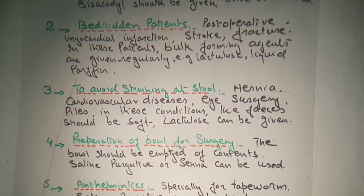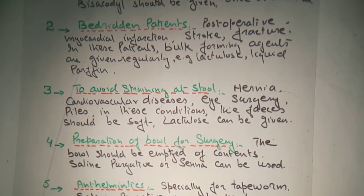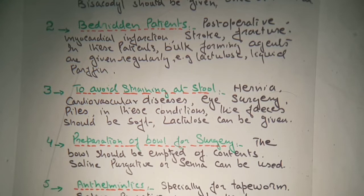Preparation of the bowel for surgery — the bowel should be emptied of its contents. Senna or senna compound can be used. The bowel should be emptied before the surgery.